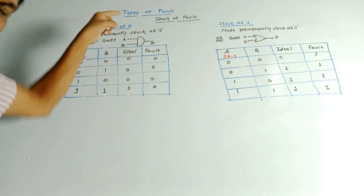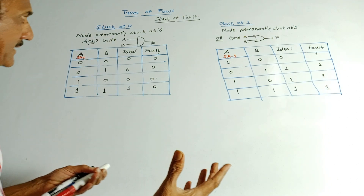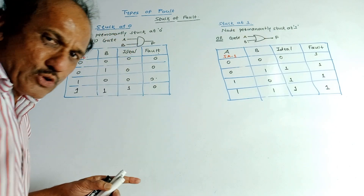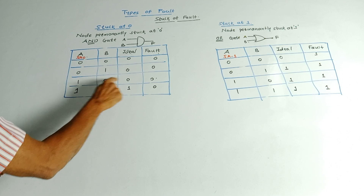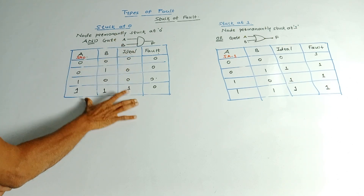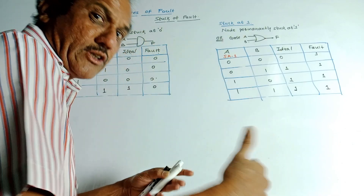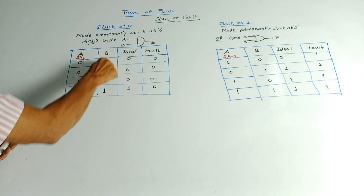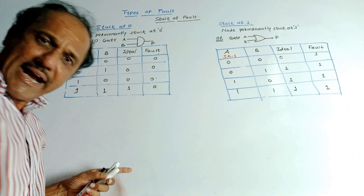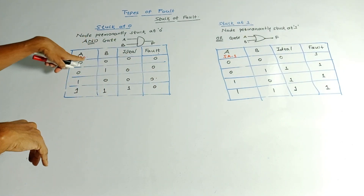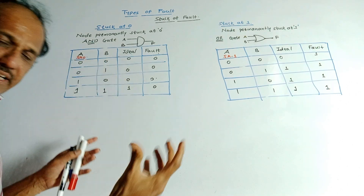Consider an example of an AND gate — a two-input AND gate with inputs A and B and output F. In an AND gate, the output is high only if both A and B are high. In the truth table, the ideal outputs are: 00→0, 01→0, 10→0, 11→1. But suppose input A is stuck at 0 — it remains 0 due to a certain fault. Then irrespective of the value of B, the output is always 0, because in an AND gate, if any one input is 0, the output is 0. This is denoted as SA0, representing stuck at zero, meaning A is permanently maintaining its value at logic 0.